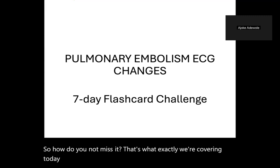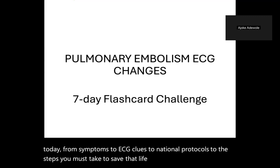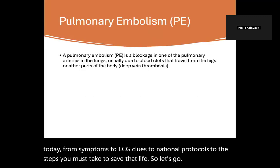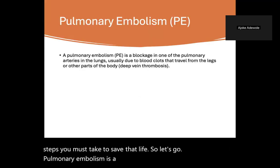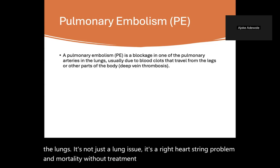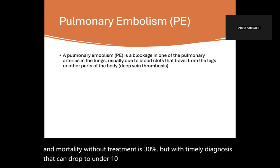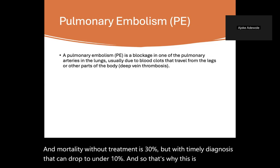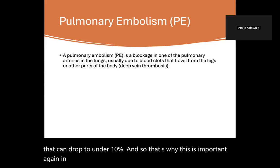So how do you not miss it? That's exactly what we're covering today — from symptoms to ECG clues to national protocols to the steps you must take to save that life. Pulmonary embolism is a clot, usually from the legs, that lodges in the lungs. It's not just a lung issue — it's a right heart strain problem. Mortality without treatment is 30%, but with timely diagnosis that can drop to under 10%.